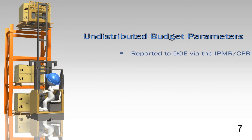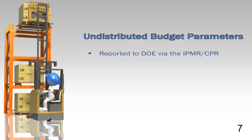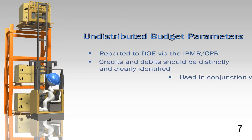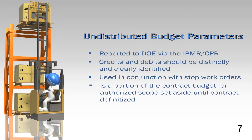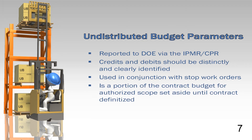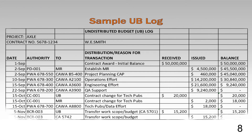The UB log is very important, not only for tracking the UB receipts and allocations, but for traceability to and within the IPMR or CPR format reports. The amount of undistributed budget is reported in the monthly IPMR or CPR in Formats 1, 2, and 3, with receipts, allocations, and scope for existing UB balances discussed in Format 5. More detailed discussion of UB transactions in relation to a stop work order, SWO, or authorized unpriced work, AUW, is provided in later slides. This is an example of an undistributed budget log, detailing various transactions when maintained outside the CBB or PBB.